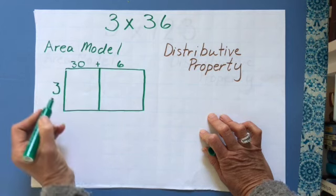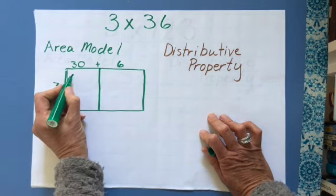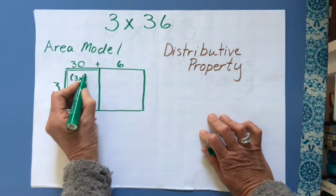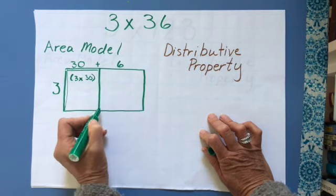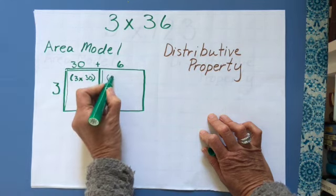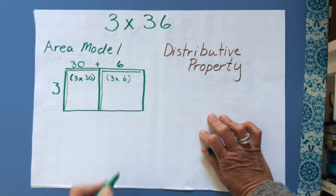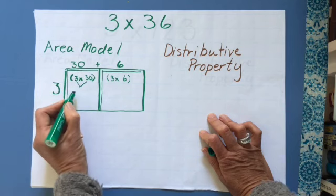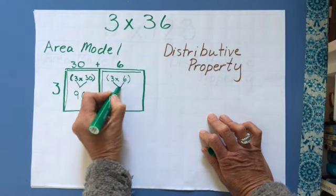The next step is wherever we see a plus sign, we draw a line. Now I'm going to find the length of this side, which is three times the length of this side, which is 30. Then I go to the next box — the length of this side is three, and the length of this side is six. Now I find the partial product in each box: three times 30 is 90, and three times six is 18.